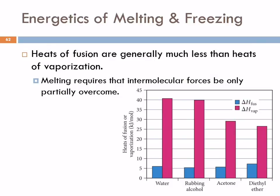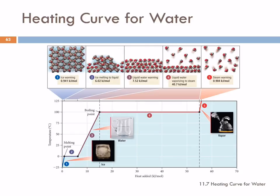The heat of fusion is usually a lot less than the heat of vaporization, because in order to melt something, you don't have to completely break the intermolecular forces — the molecules are still close and interacting; you just loosen them up a little. Here's a graph comparing heats of fusion in blue to heats of vaporization, and as you can see, heat of vaporization is much higher. We can put all these ideas together in what's known as a heating curve — but that's a new section, so we'll start a new video.